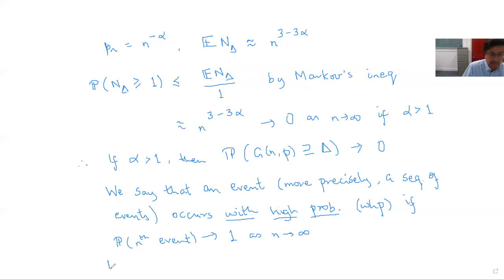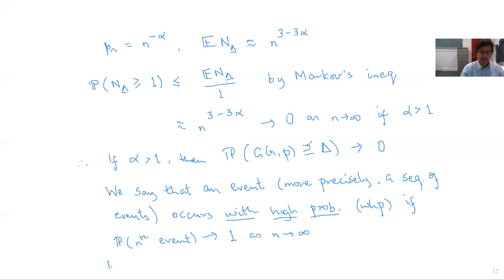In this terminology, the random graph G(n,p) contains no triangles — i.e., is triangle-free — with high probability if α > 1. That deals with the case α > 1. What happens if α < 1? If α < 1, then the expected number of triangles tends to infinity as n tends to infinity, so the random graph on average has lots and lots of triangles.